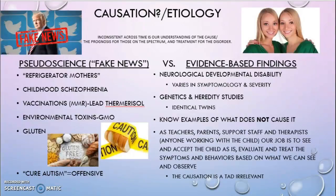As studies have been conducted in the past, while we don't know many examples of what does cause autism, we do know several examples of what does not cause it, such as all of those listed on the left. But as teachers, parents, support staff, or anyone working with a child that has autism, it's not our job to focus on the cause, but our job to evaluate and treat the symptoms and behaviors based on what we can see and observe. So the causation is kind of irrelevant.